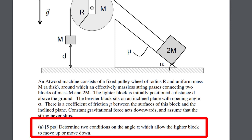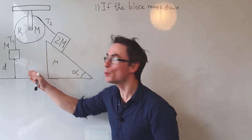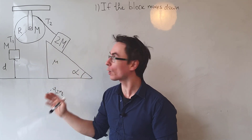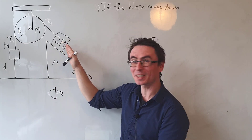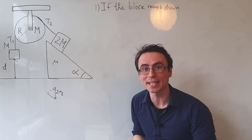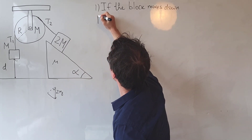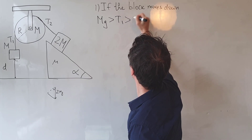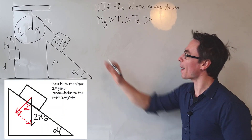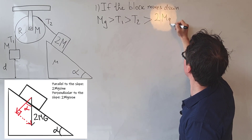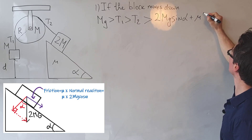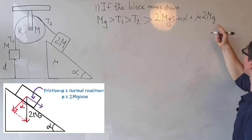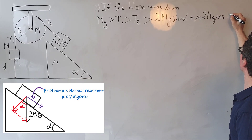Part A: determine two conditions on the angle alpha which allow the lighter block to move up or down. If the block is moving down, then M times G (the weight of this block) will be greater than tension T1, which will be greater than tension T2, which will be greater than the component of gravity acting along the inclined plane plus the friction. The frictional component is given by the coefficient of friction multiplied by the normal reaction, which is 2Mg times cos of alpha.